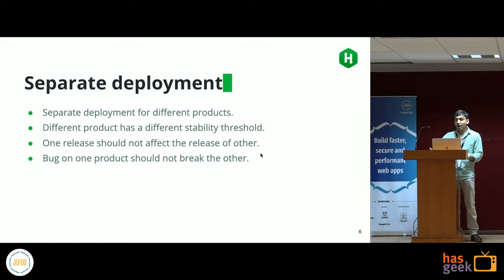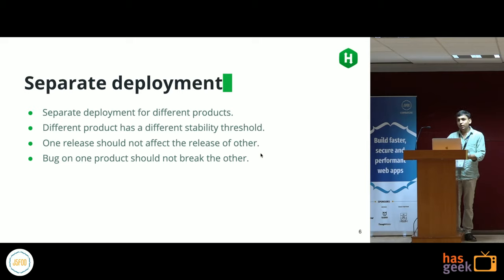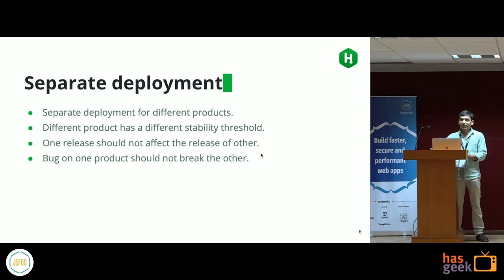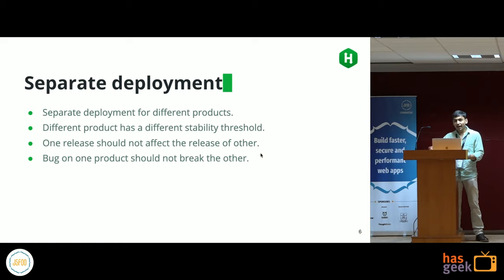We can push fast on HackerRank Community and break things there, but we can't do the same for our enterprise app. For enterprise you typically do pushes every two to three weeks with different versions, while for community we do that daily. So we needed a different release cycle for each project. If you're updating a core component, we want that to happen only for one product and not affect all products.